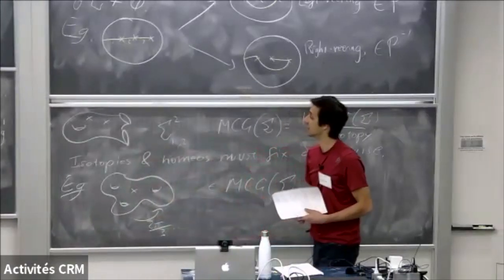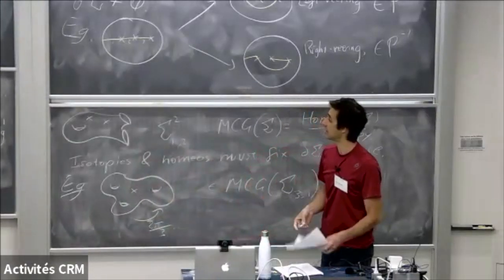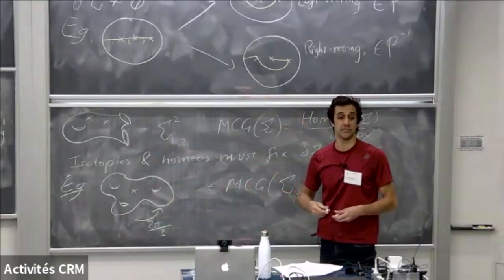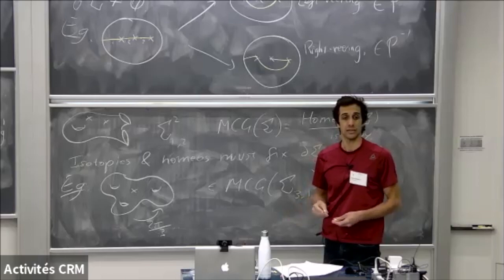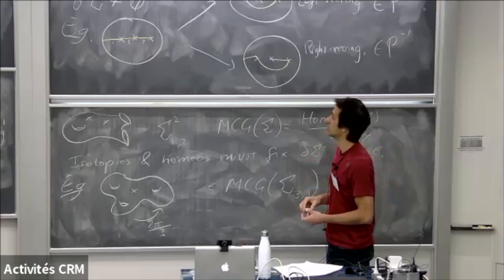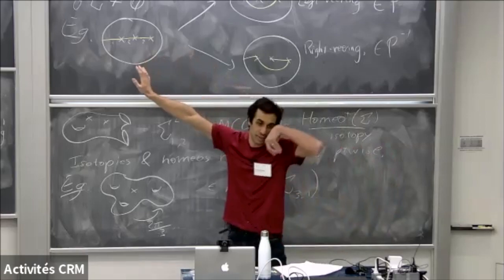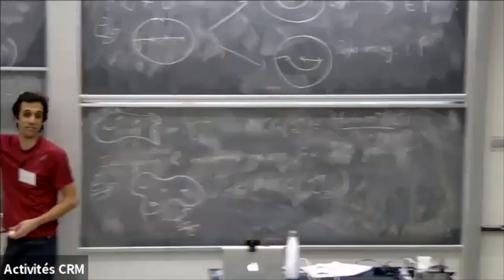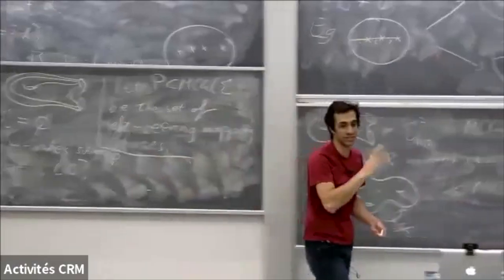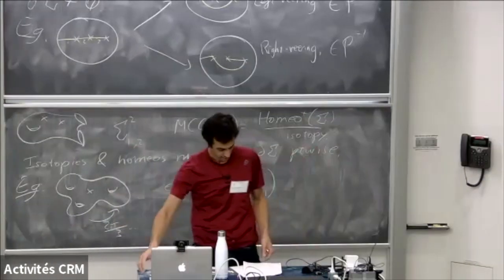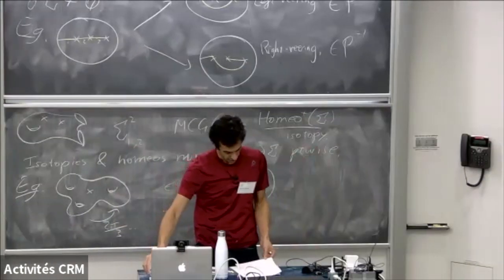Is the enumeration important? Yes — if you enumerate differently, you get a different left ordering. Over here it doesn't matter because everything is hitting the boundary, but you want to look at the first one hitting the boundary. So that was left orderability.